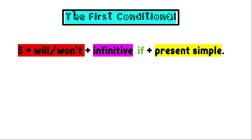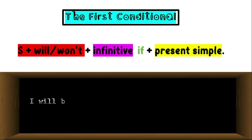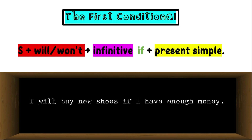We can also form the first conditional with the if clause coming at the end. So we have subject plus will or won't — this is the future — plus infinitive, the base form after will. And then the if clause comes at the end, plus present simple. For example: I will buy new shoes if I have enough money. The if clause is mentioned at the end, whereas in the previous sentence we mentioned the if clause at the beginning. We can use both.